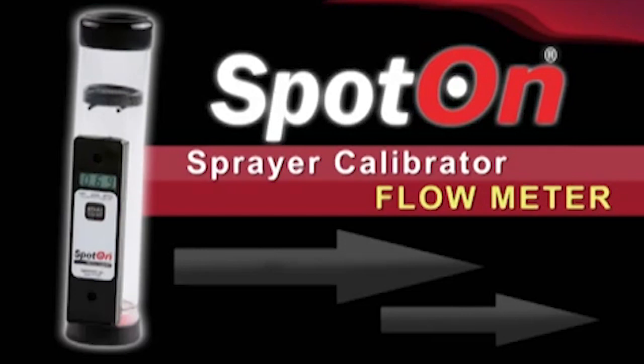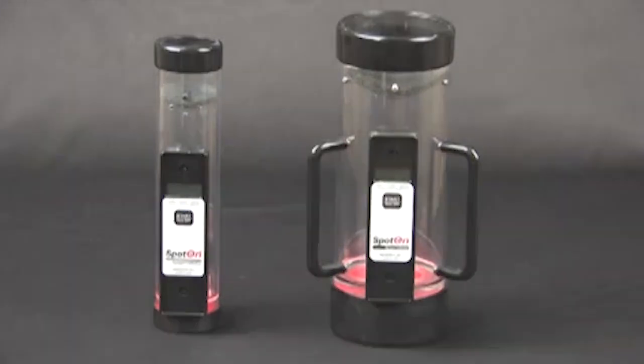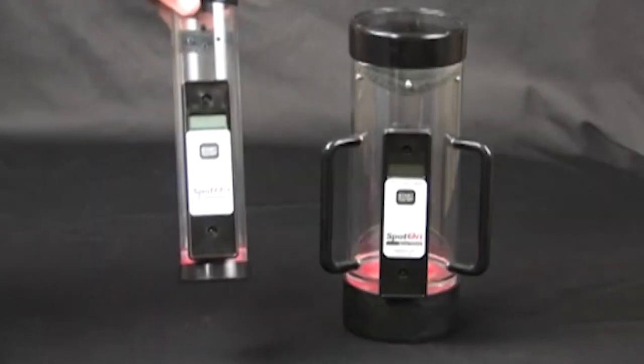The SpotOn Sprayer Calibrator is a handheld electronic meter for measuring spray nozzle flow rates. With this meter you can quickly and accurately determine true nozzle flow rate in 10 seconds or less. This patent-pending meter comes in two sizes.